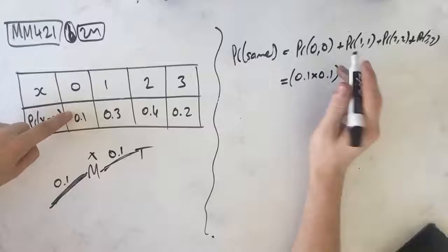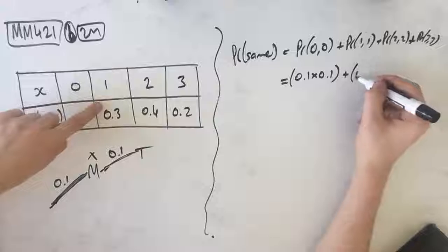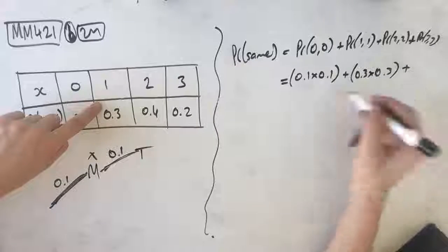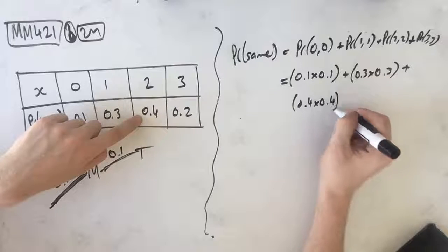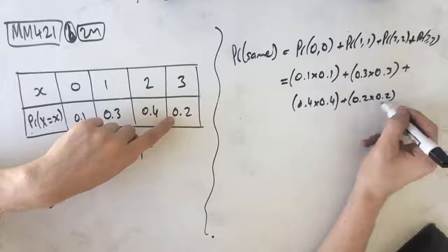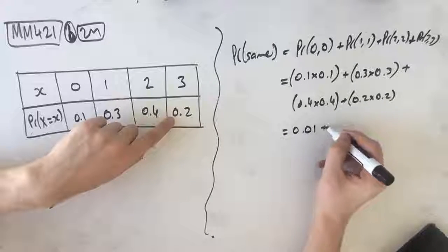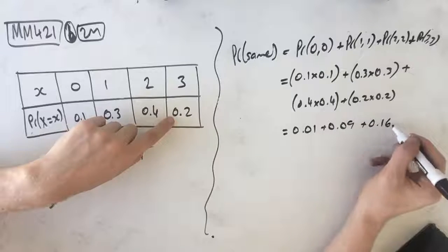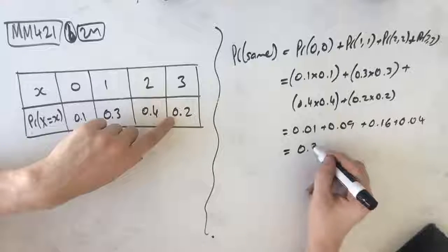Therefore, 0.1 times 0.1 is the probability that we have zero on both days. Then one on both days is 0.3 times 0.3, in the same kind of way. 0.4 times 0.4 is two on both days, and three on both days is 0.2 times 0.2. So then what we get is 0.01 plus 0.09 plus 0.16 plus 0.04, which gives us 0.3.